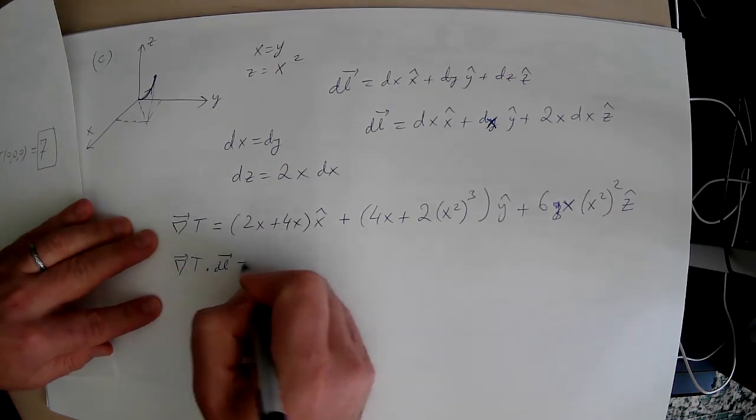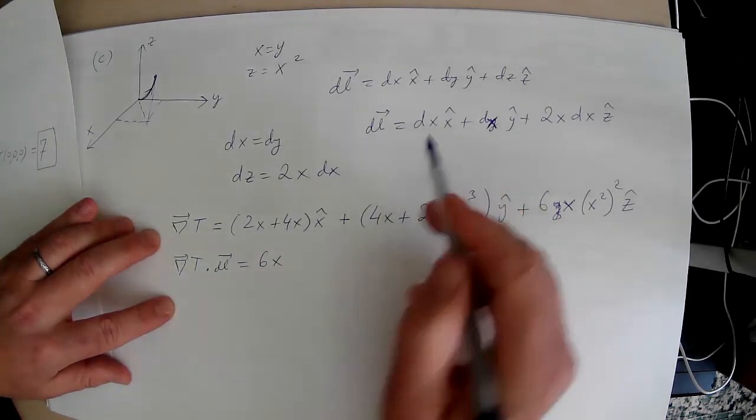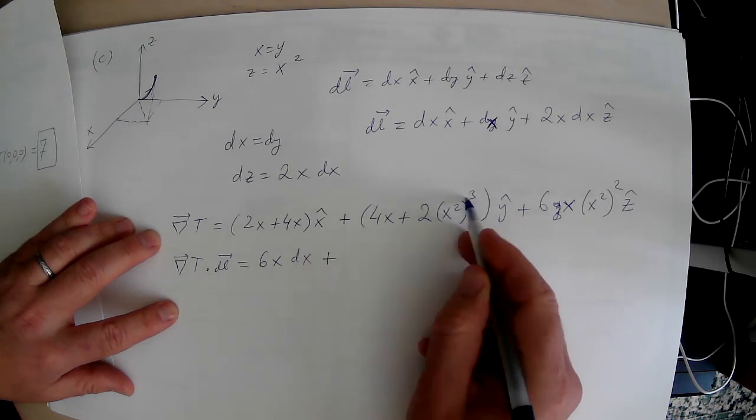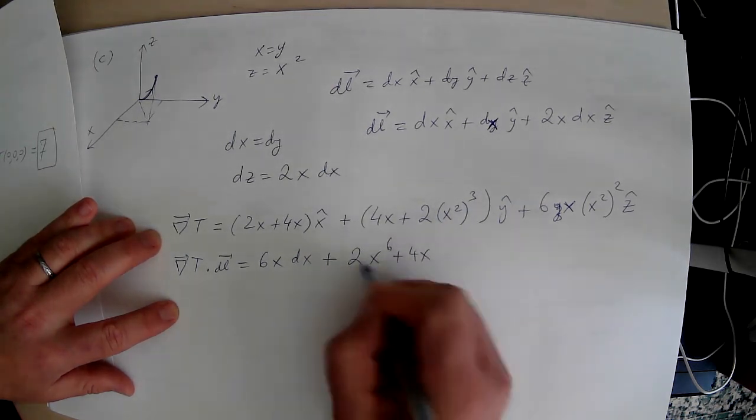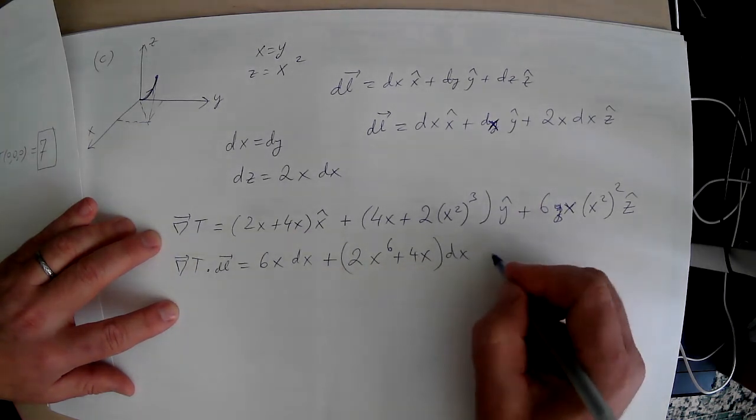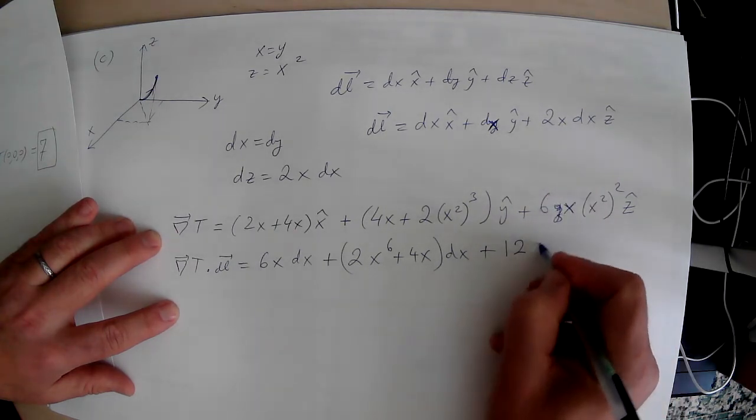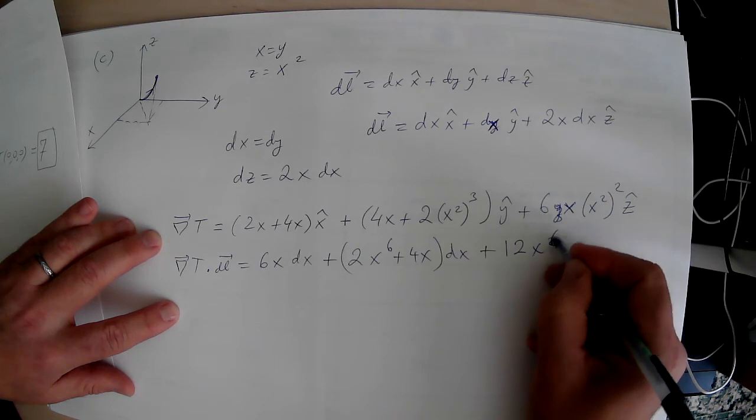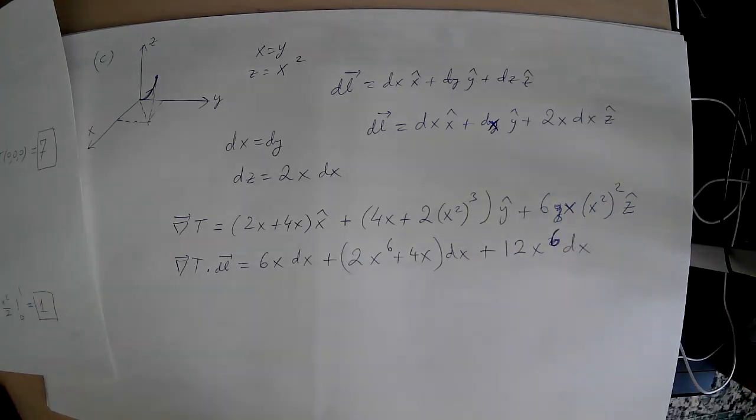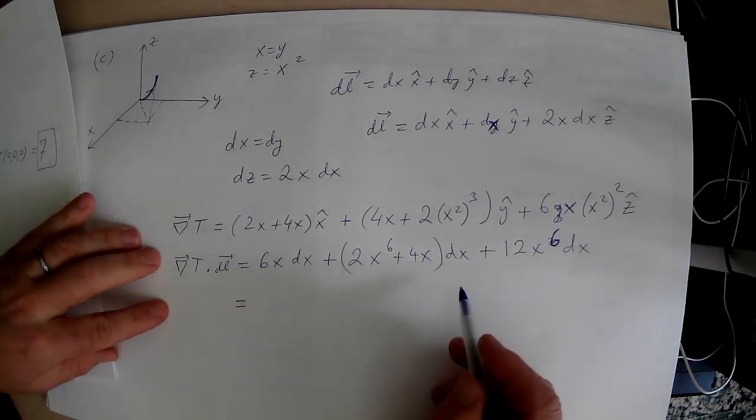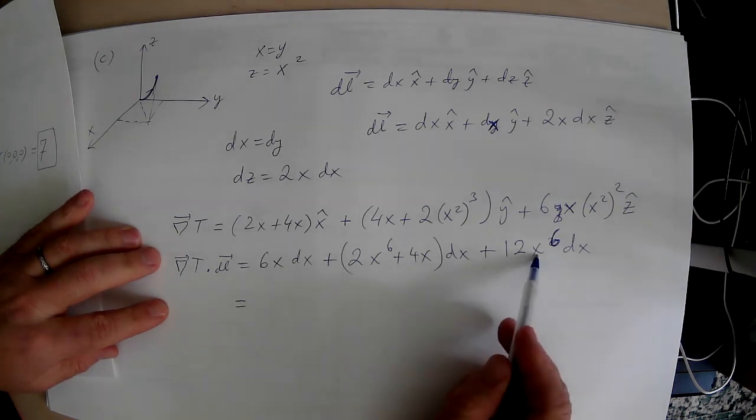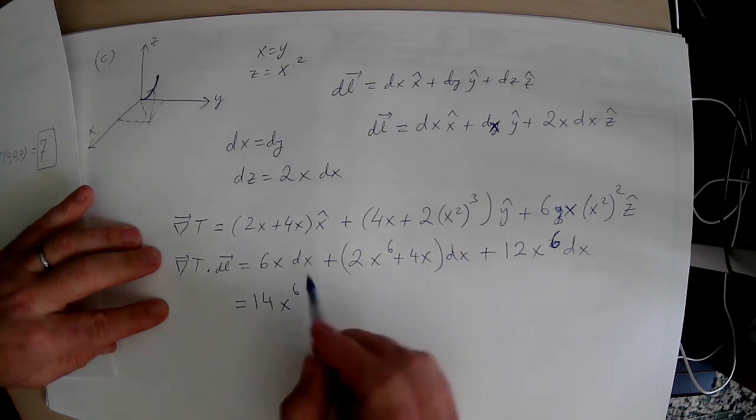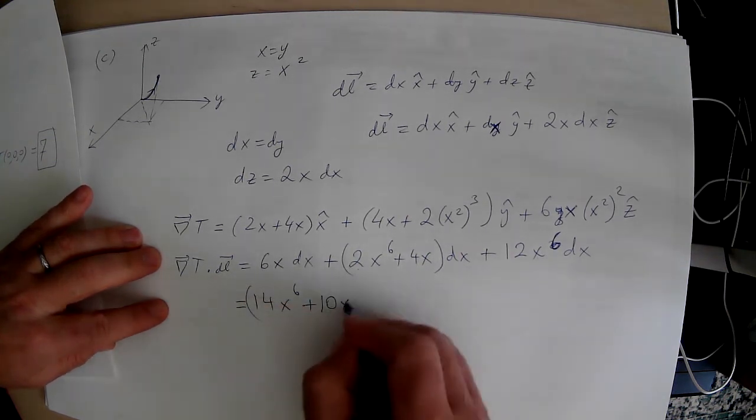So gradient of T dot dl. So I have 6x dx. All of them will bring dx. That's common. Let's write it out. So this is x² cubed, 2x⁶, 2x⁶ plus 4x dx. And then finally, I have 2x and 6x. That's 12x². And then I have x⁴ here. So that's going to bring me 12x⁶ dx. Alright. So let's add them up to get our polynomial here. 12x⁶, 2x⁶. So I have 14x⁶. Then I have 4x plus 6x. That's like 10x dx.